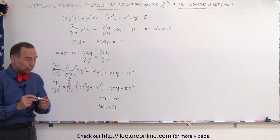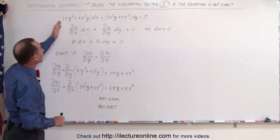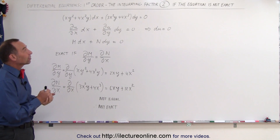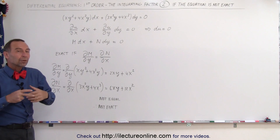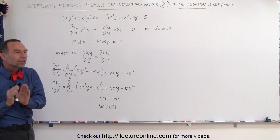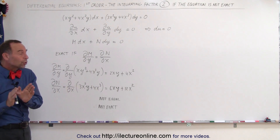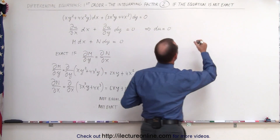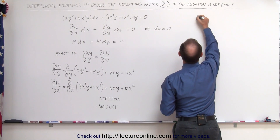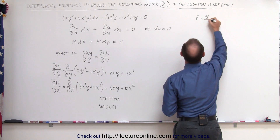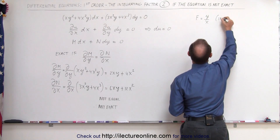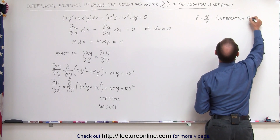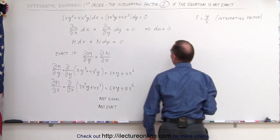What we can do is multiply both sides of the original differential equation by an integrating factor, and when we do so it will become exact. We won't show yet how we got the integrating factor — that will be the next video — but let's say the integrating factor f is equal to y over x.